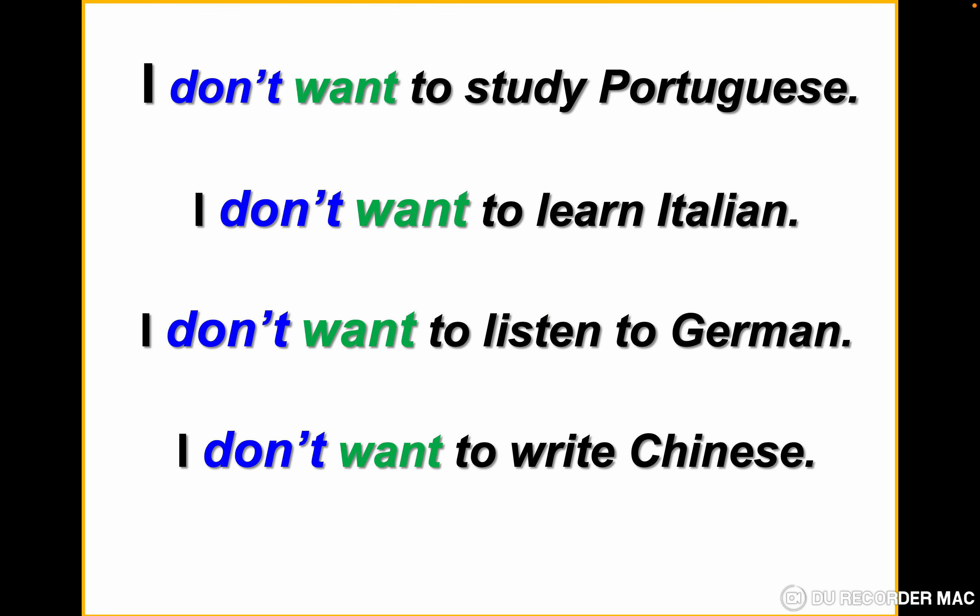Negative form examples: I don't want to study Portuguese. I don't want to learn Italian. I don't want to listen to German. I don't want to write Chinese. Let's repeat after me: I don't want to study Portuguese. I don't want to learn Italian. I don't want to listen to German. I don't want to write Chinese.